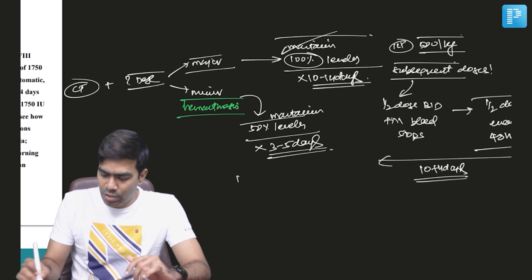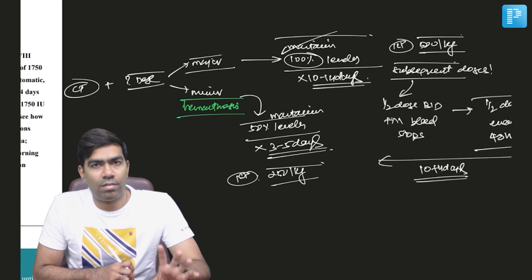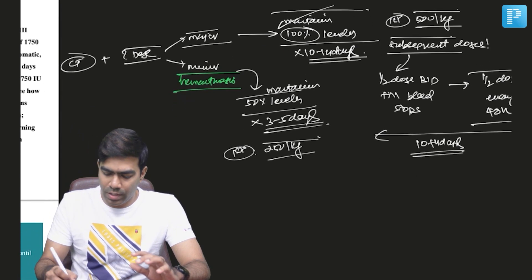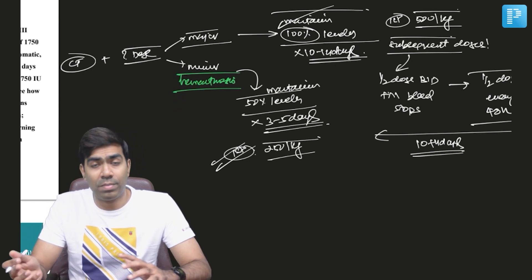So the initial first dose in patients with hemarthrosis will be 25 units per kilogram of factor 8 concentrate. And then subsequent doses will be almost similar to what you have dealt with for major bleeding.